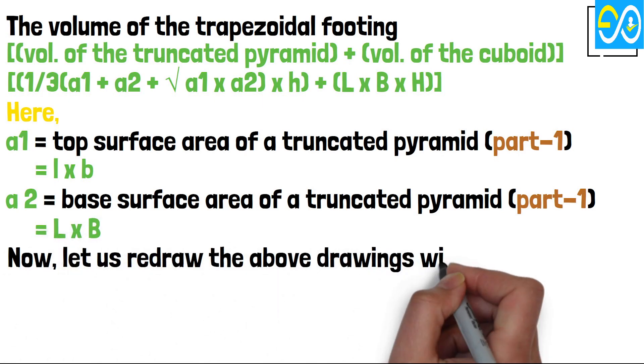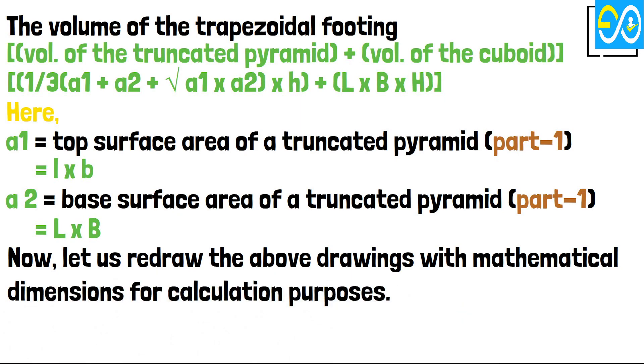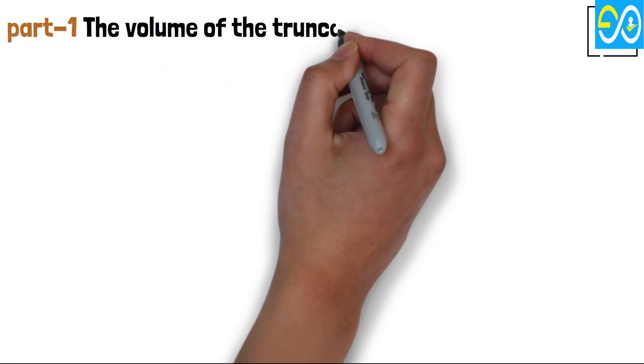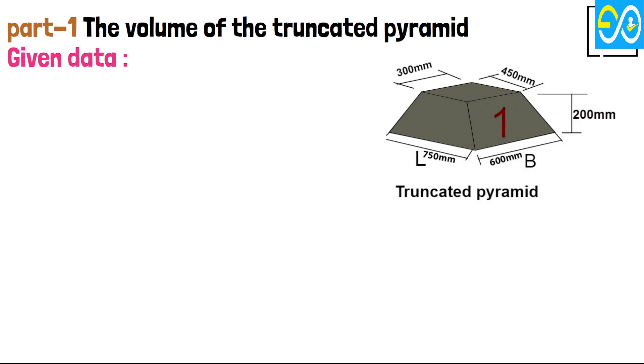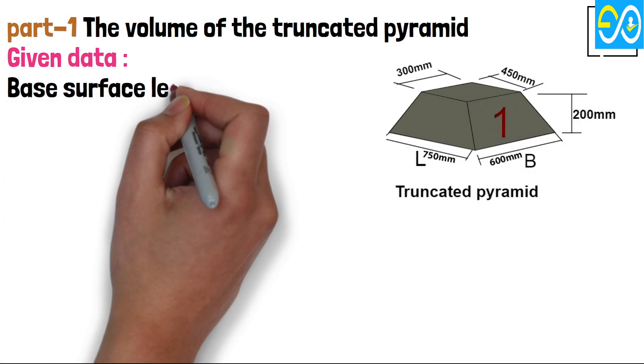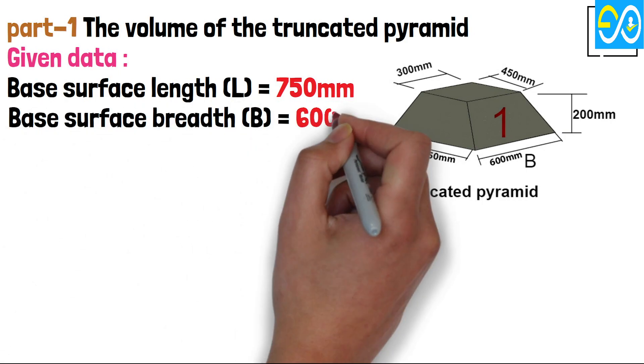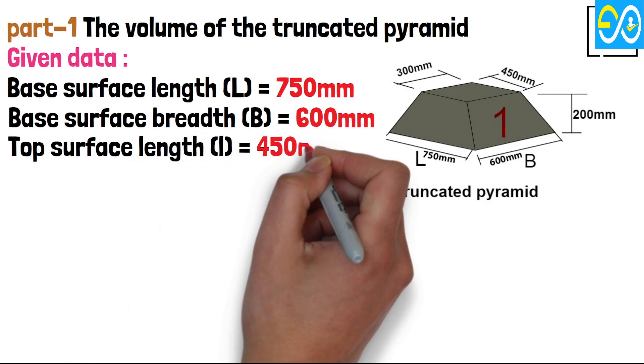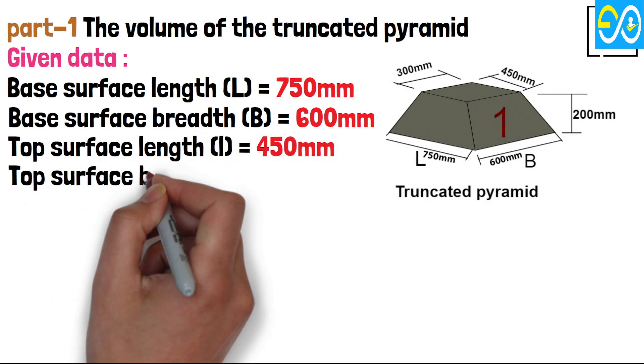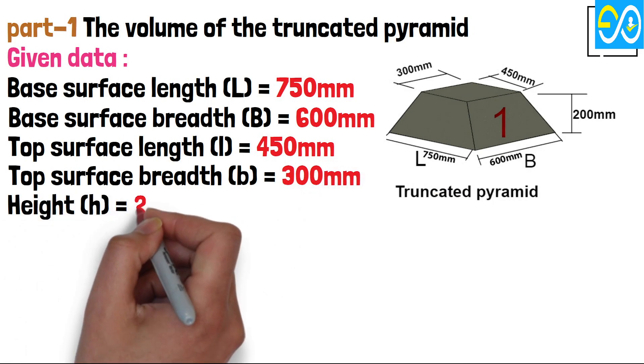Now, let us redraw the above drawings with mathematical dimensions for calculation purposes. Part 1: The Volume of the Truncated Pyramid. Given data: Base surface length equals 750 millimeters. Base surface breadth equals 600 millimeters. Top surface length equals 450 millimeters. Top surface breadth equals 300 millimeters. Height equals 200 millimeters.